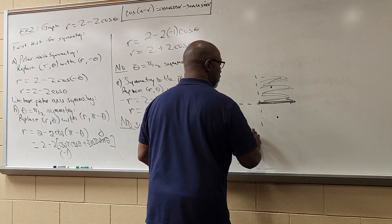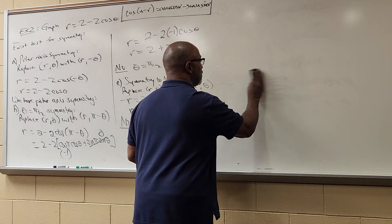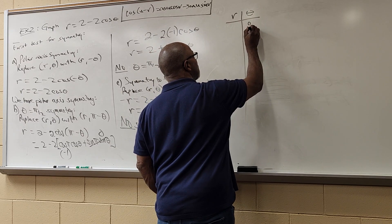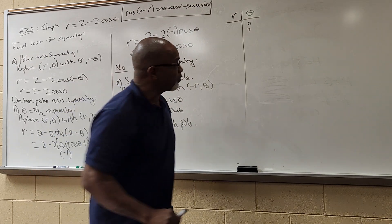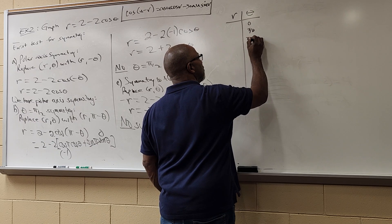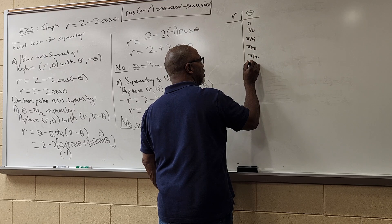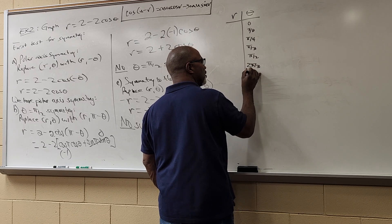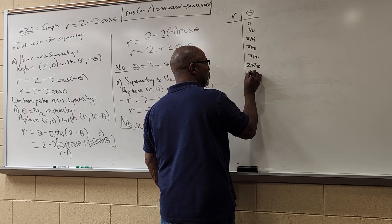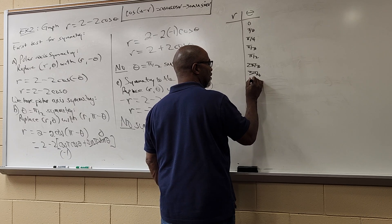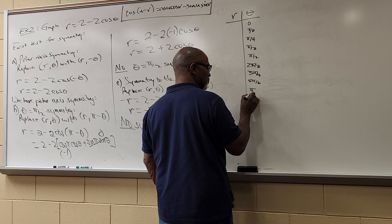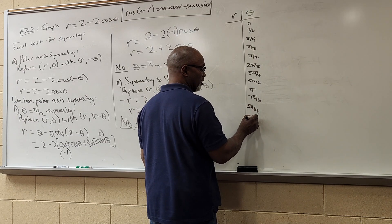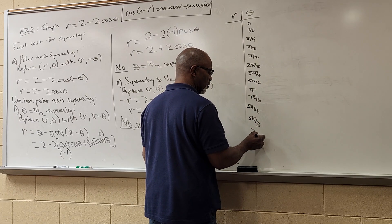I'm definitely going to have to plot some points. I'll plot points from 0 to essentially 3π/2. The θ values I'll use are: 0, π/6, π/4, π/3, π/2, 2π/3, 3π/4, 5π/6, π, 7π/6, 5π/4, 5π/3, and 3π/2.